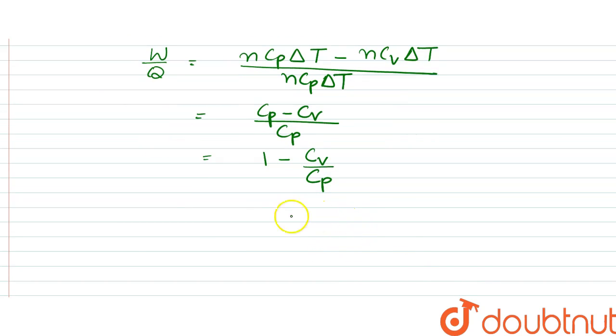Since for monoatomic gas cv is equal to three by two R, therefore cp would be equal to three by two R plus R, so that is five by two R. Therefore, the fraction